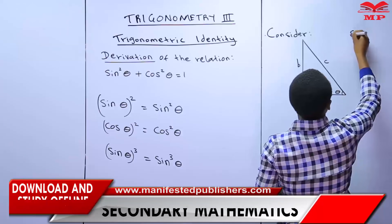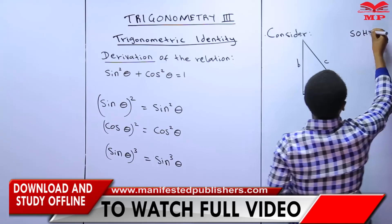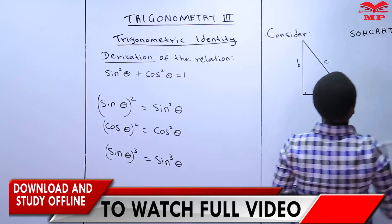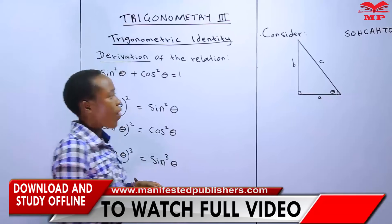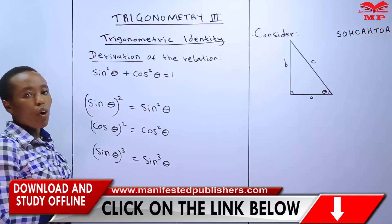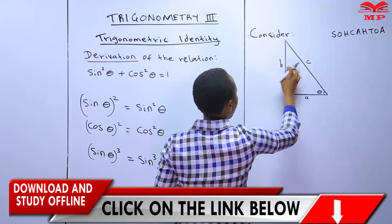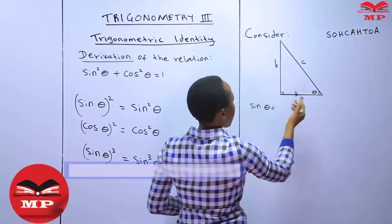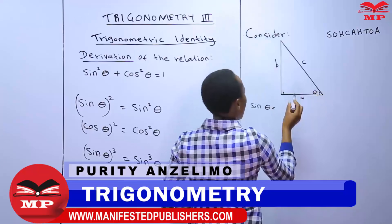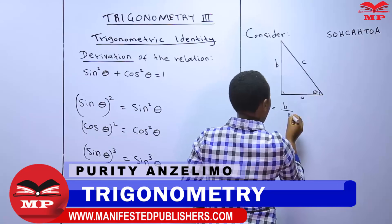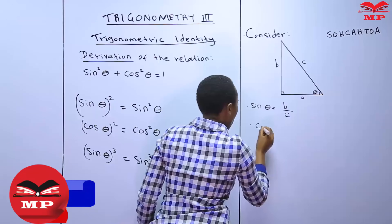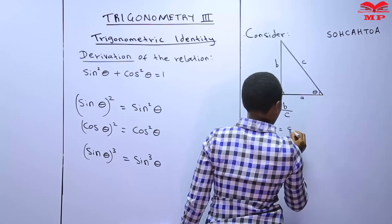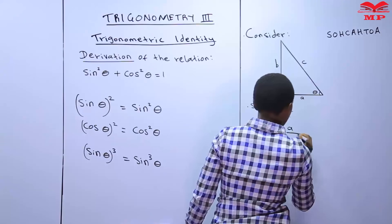I would like you to remember these trigonometric ratios — the formulas, SOH-CAH-TOA. I want us to find the sine and the cosine of theta using A, B, and C. So we start with sin theta. Sin theta will be given by the opposite, which is B, all over the hypotenuse, which is C. Then cos theta will be given by the adjacent, which is A, all over the hypotenuse, which is C.